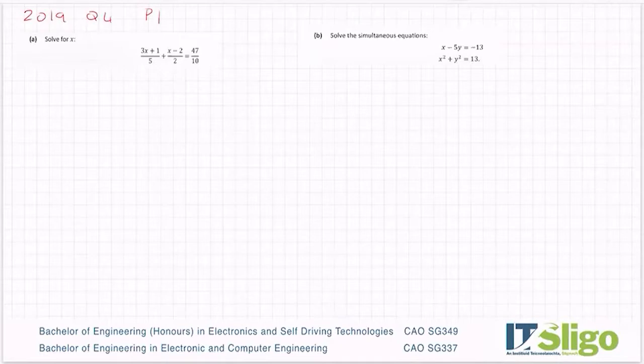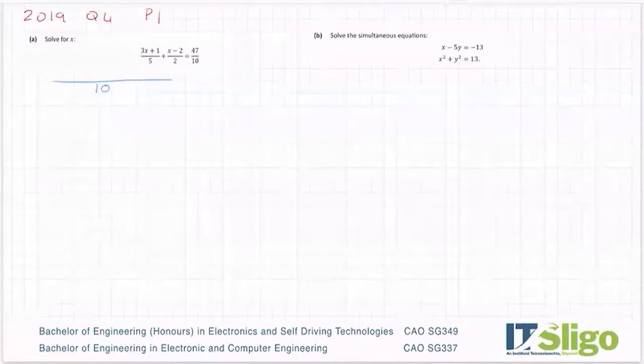Let's tackle part A first. So solve for x: (3x + 1)/5 + (x - 2)/2 = 47/10. Anytime there's fractions, you're looking at a common denominator.